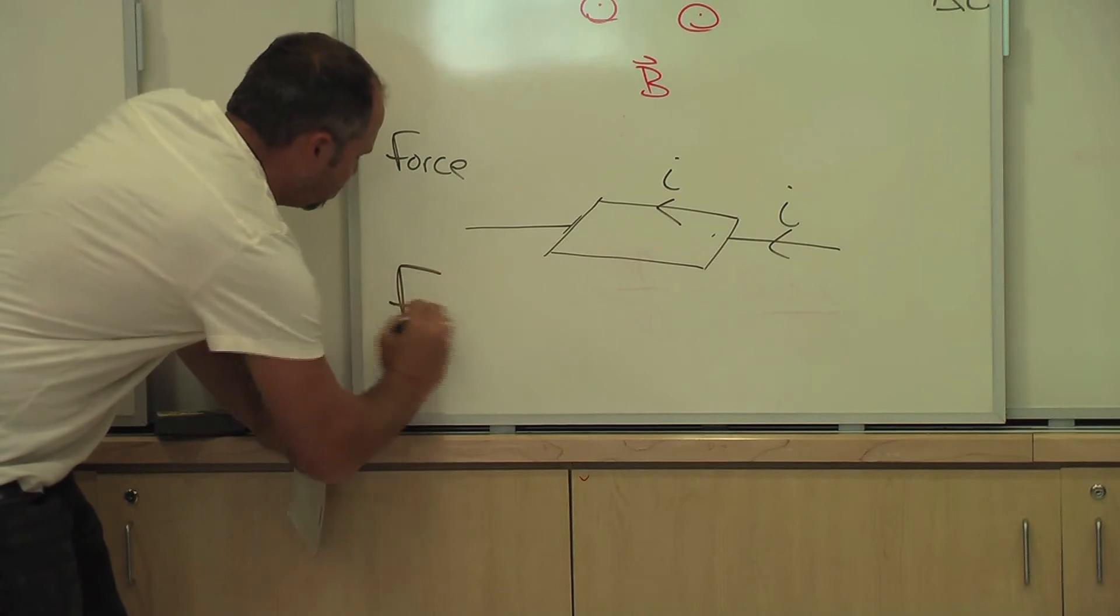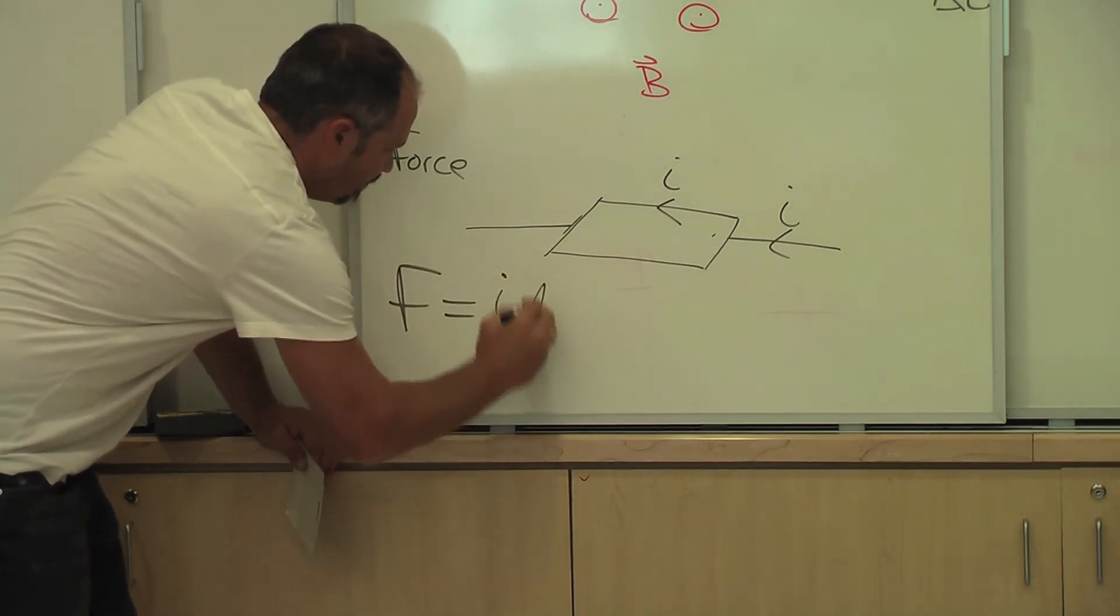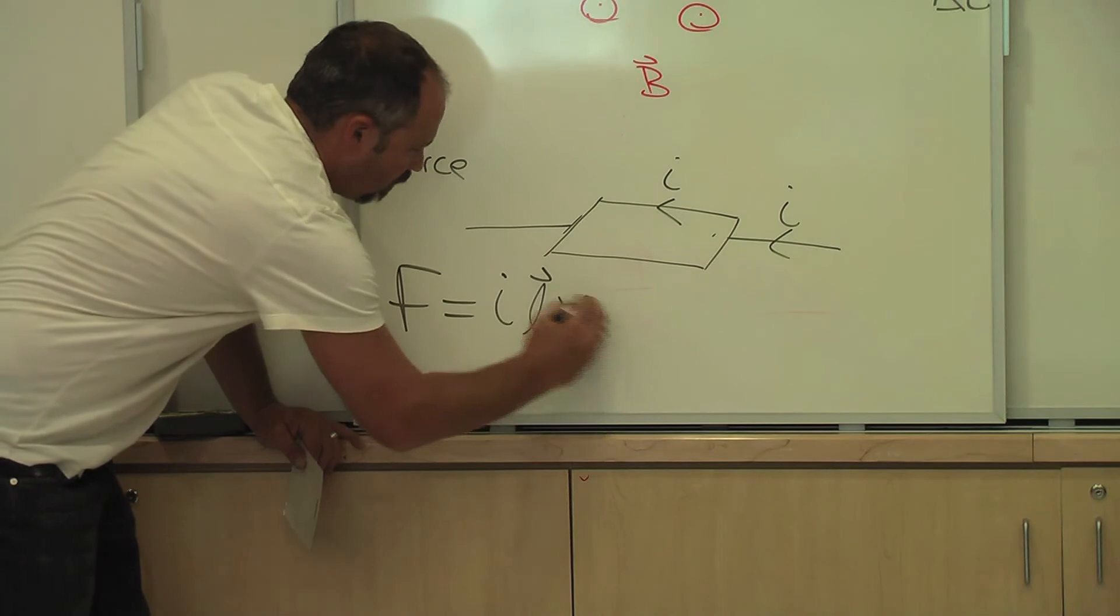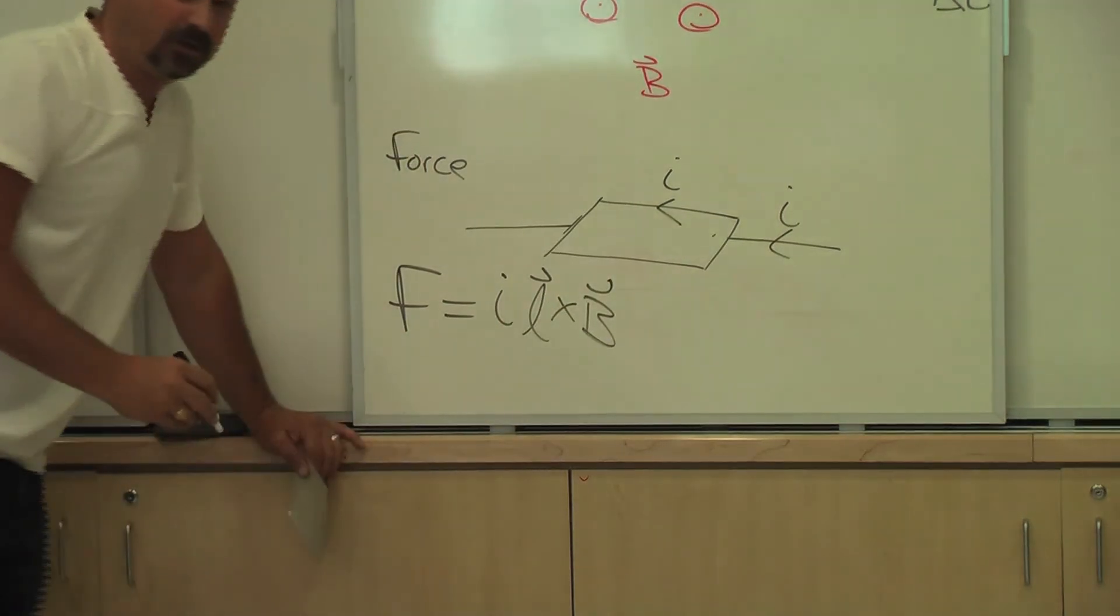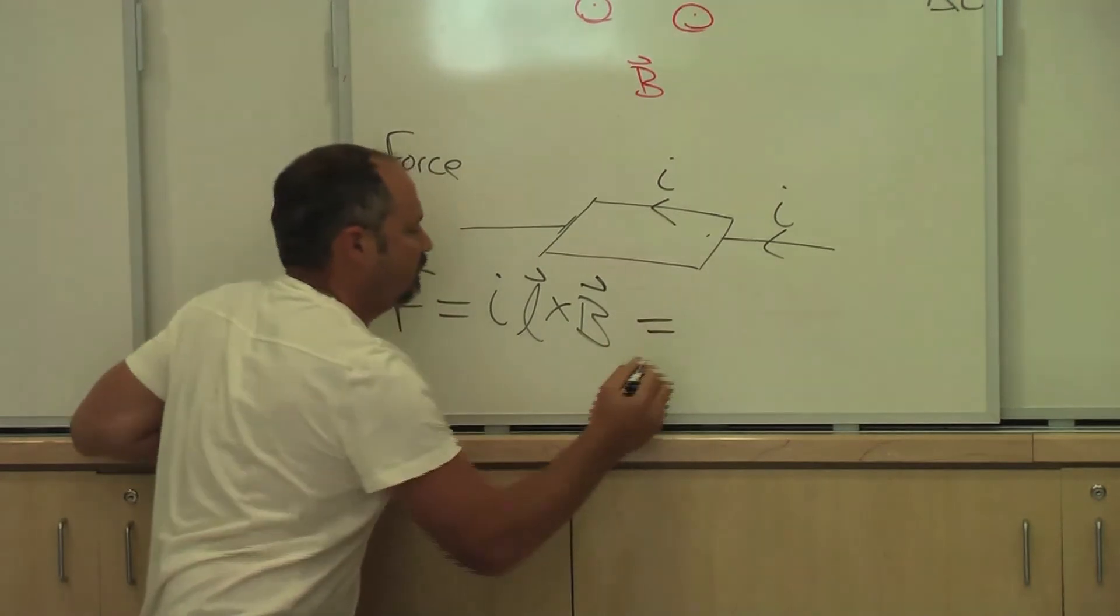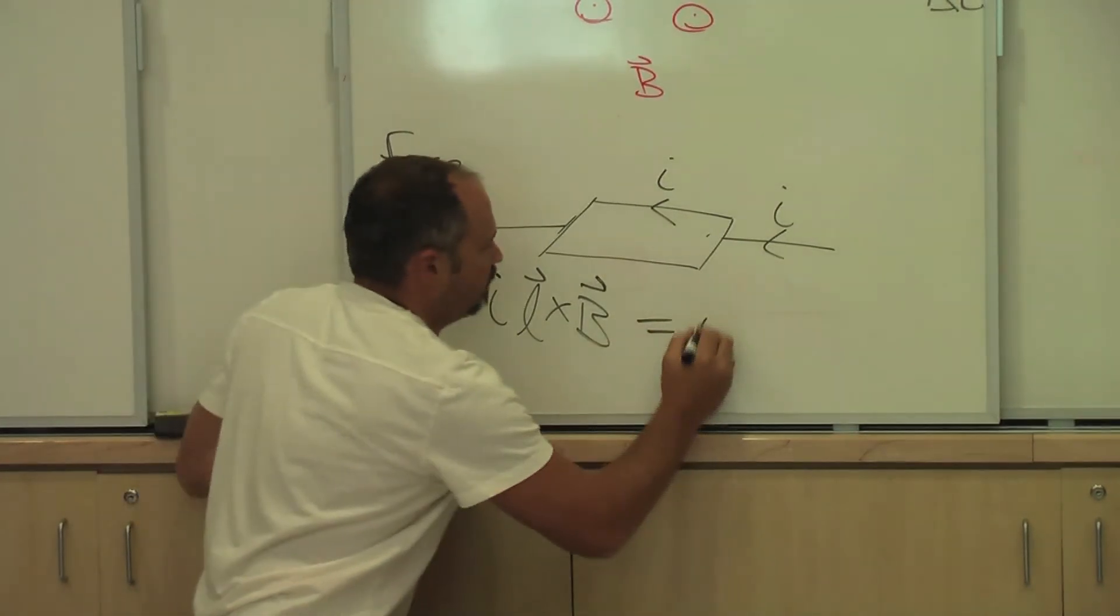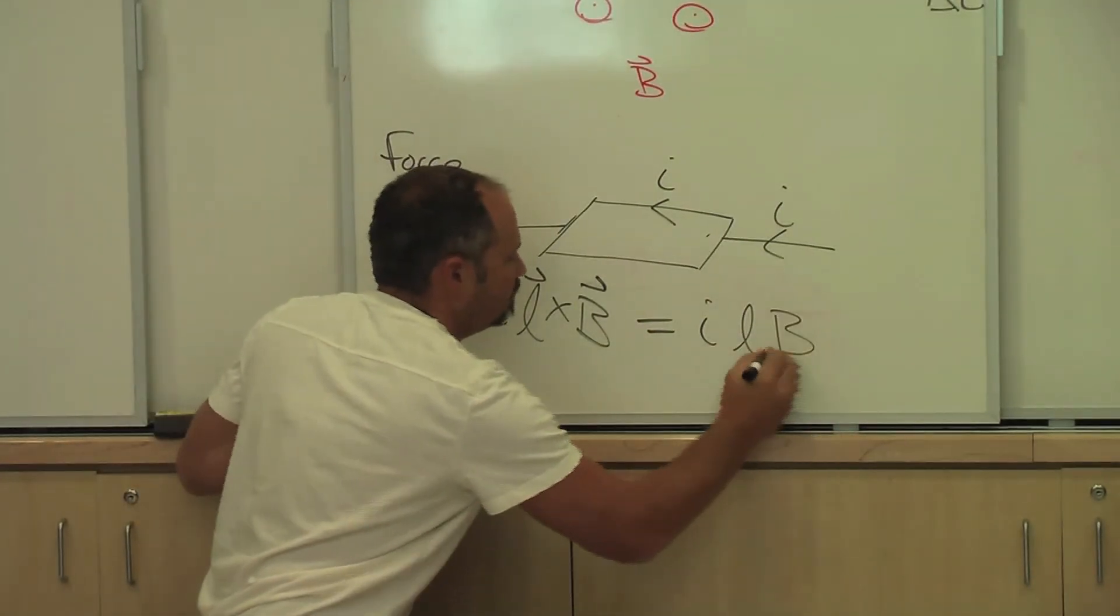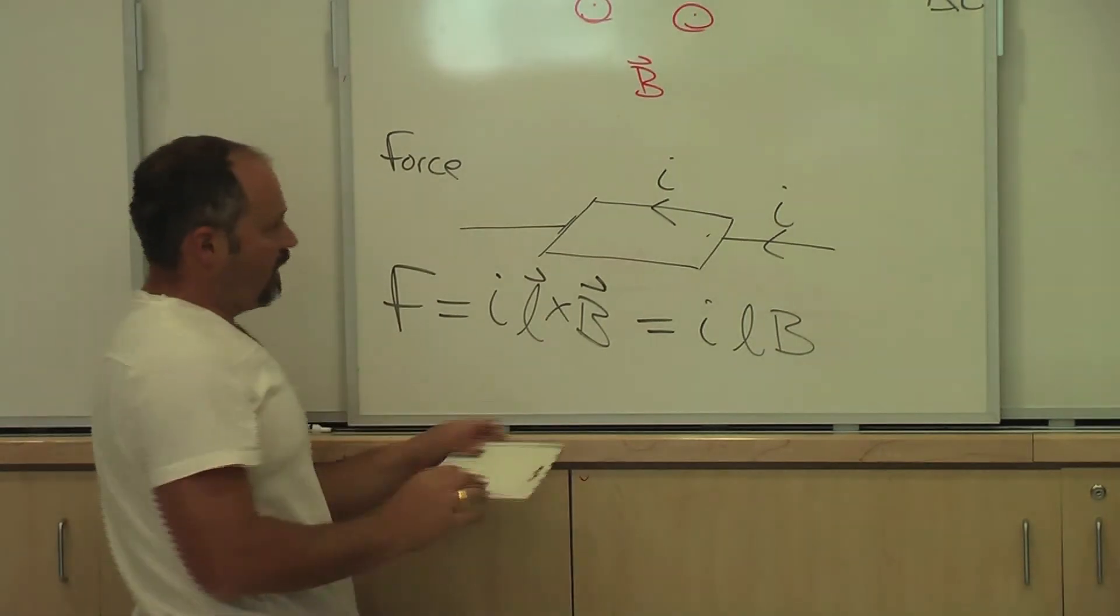So now I have current flowing like this, and then you need a force to turn the handle. Well, force is created like this: current, the direction of the current crossed with the magnetic field. This should be the vector side. And since they're perpendicular, we just get L times B. Now, let's look at direction.